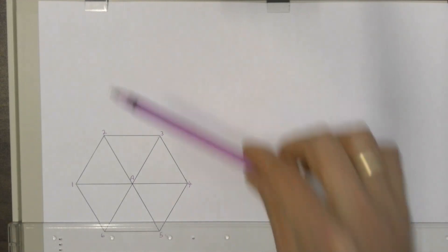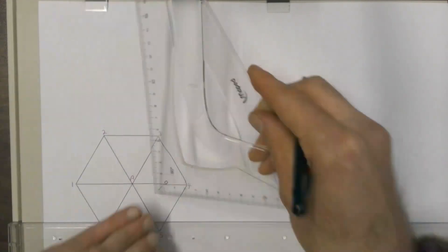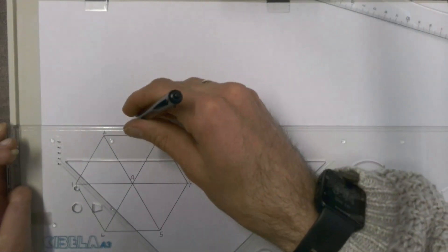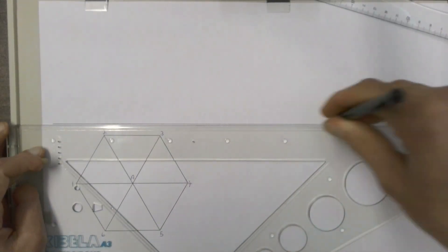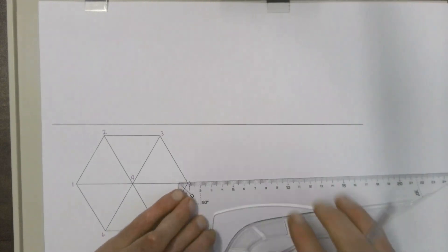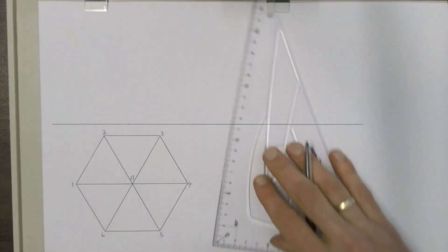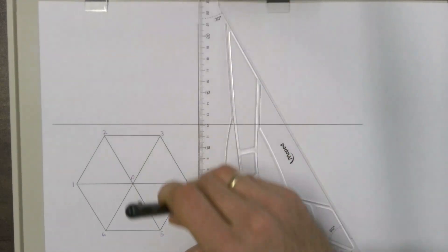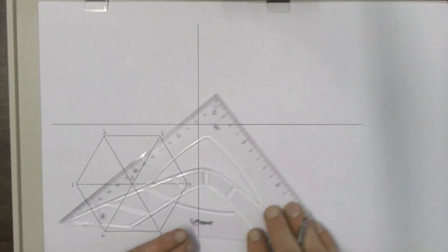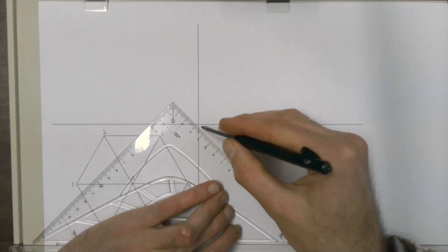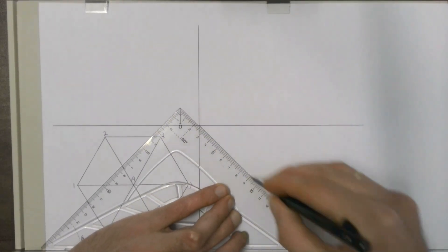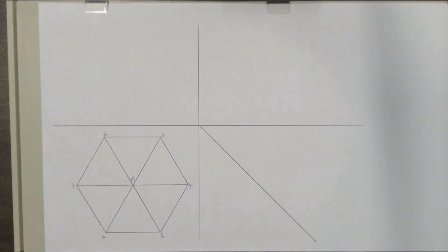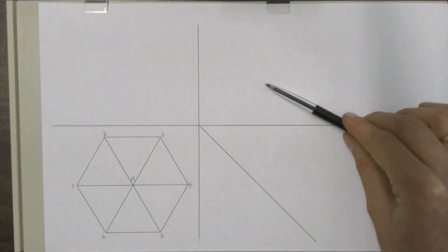We're going to draw a front view up here. We leave a 10mm gap between our top view and our front view before drawing the XY line. We also draw a second XY line with a 10mm gap from the edge of our top view, and then we draw in the 45-degree line using our 45-degree set square. In first angle orthographic projection, our front view goes there and our left view goes to the right of it.